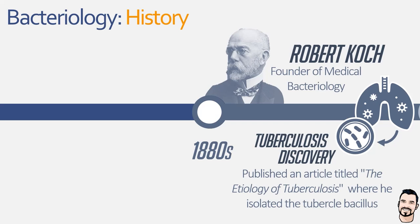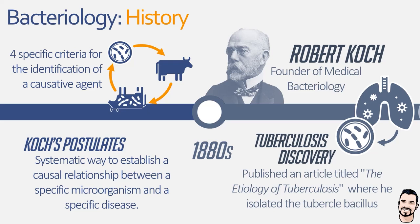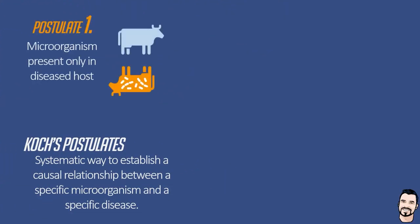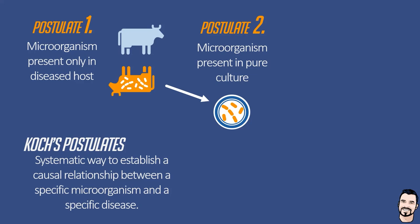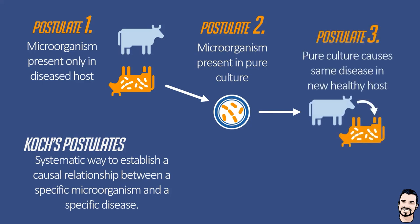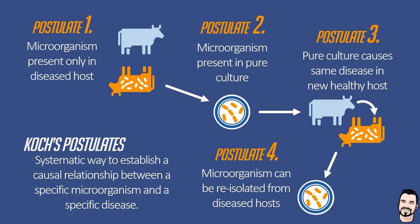Koch then built upon this scientific process for his second paper, developing a set of criteria now known as Koch's postulates — a systematic way to link specific microorganisms to a specific disease that became the gold standard for microbial research. The first postulate demanded that the specific microorganism be found in all cases of the diseased but not in healthy cases. The second was that the microorganism had to be isolated and grown in pure culture. The third was that the pure culture had to cause the same disease when introduced into a healthy host. The fourth was that the microorganism had to be re-isolated from the newly diseased and match the original isolate. Together, these postulates and rigorous research transformed microbiology.